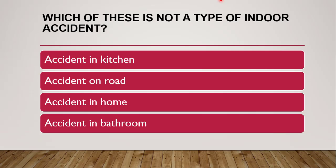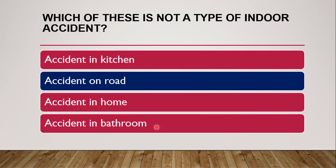Next question: which of these is NOT a type of indoor accident — accident in kitchen, accident on road, accident in home, or accident in bathroom? The correct answer is accident on road, because kitchen, home, and bathroom are all indoor locations.